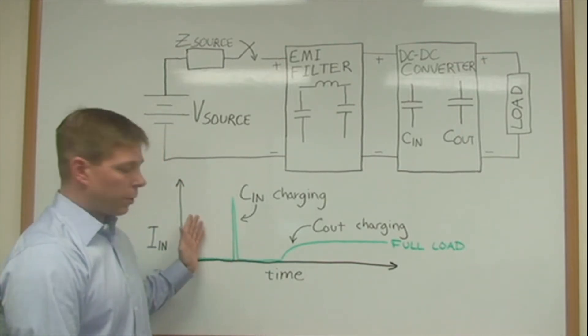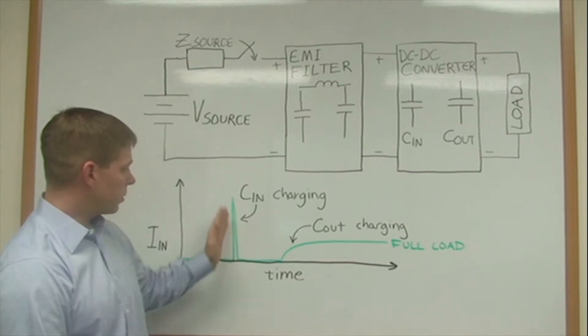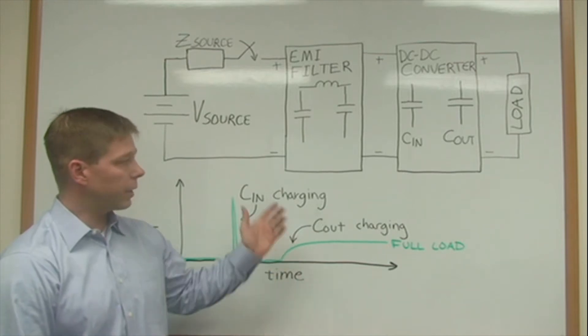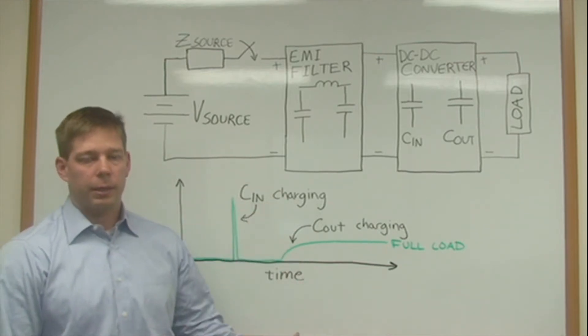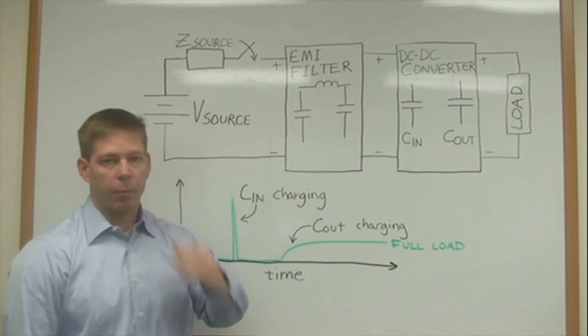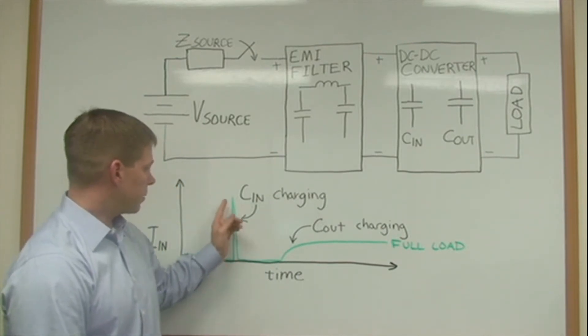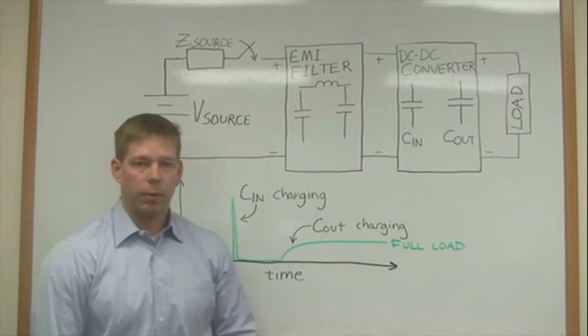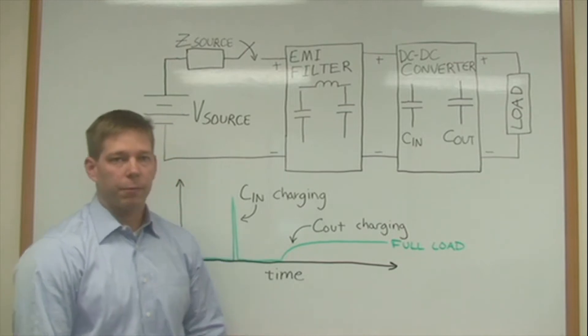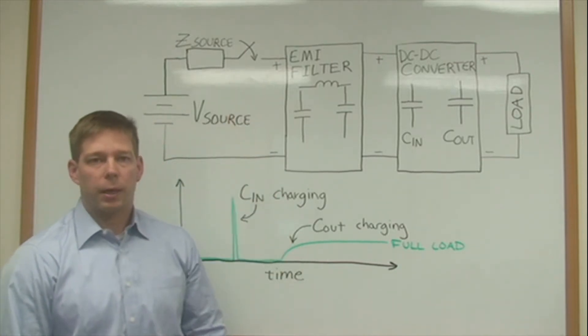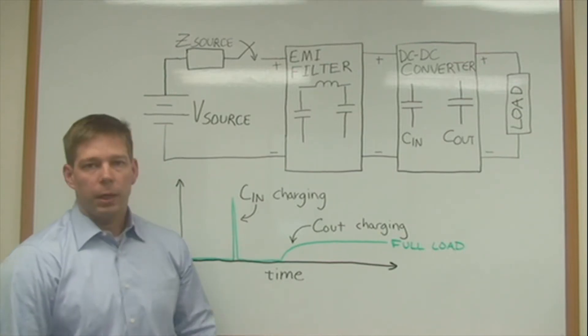The graph here shows there's an initial spike in current that's caused by the charging of the input capacitance in the DC to DC converter and any capacitance in the EMI filter. Now this particular part of the charging waveform in some cases can be a problem for systems that have a fast input voltage rise time and also have a maximum inrush current spec for the system.